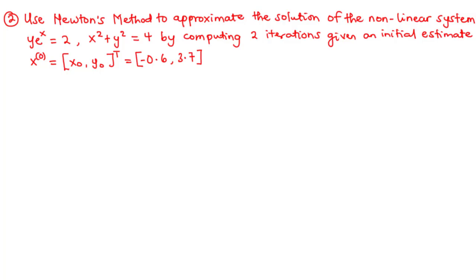In this example, we are going to use Newton's method to approximate the solution of the non-linear system: y times e to the power x equals 2, x squared plus y squared equals 4, by computing two iterations, giving an initial estimate x naught, y naught equal to negative 0.6, 3.7.